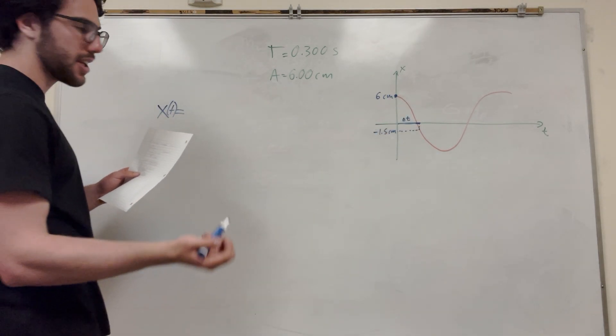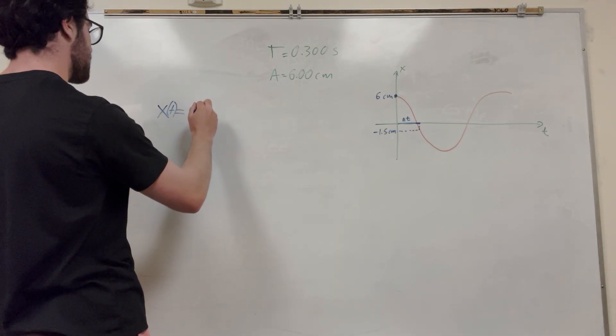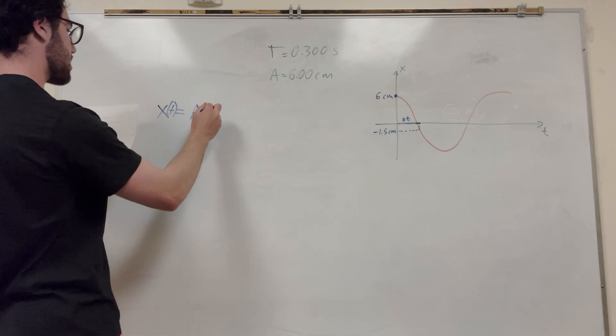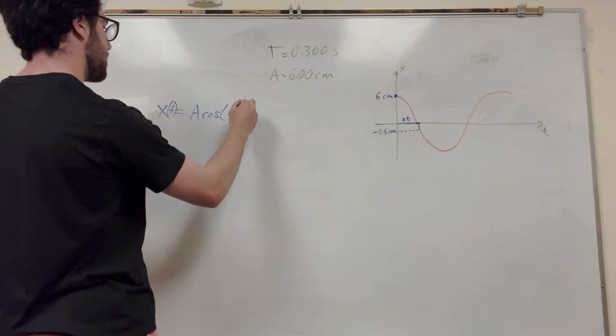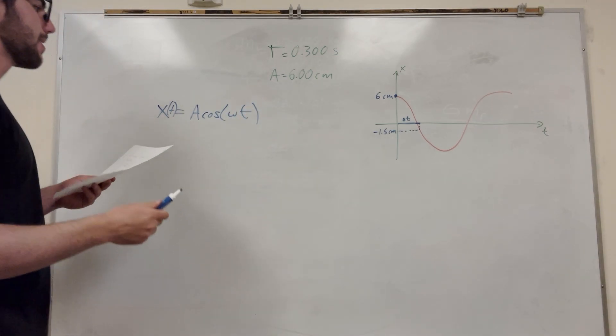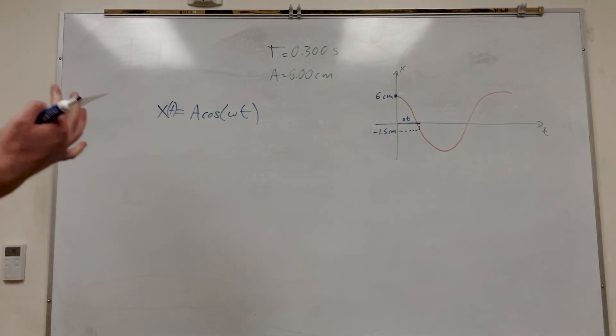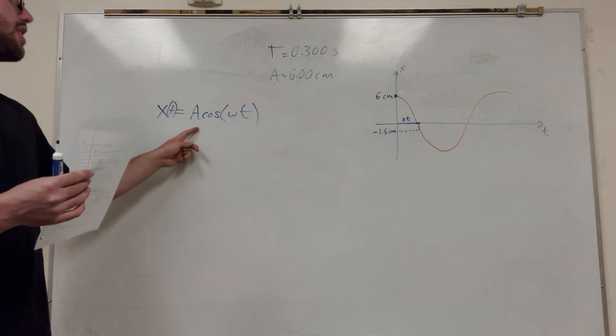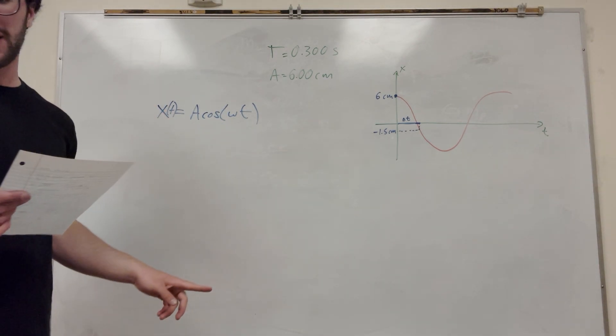And our equation for this is something that you should know if you're doing simple harmonic motion, is the amplitude times cosine of an angular frequency times t. So we have its amplitude, but we don't have this angular velocity. So how are we going to find that?